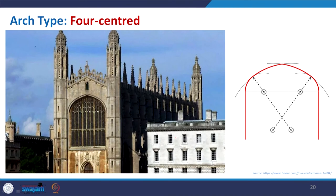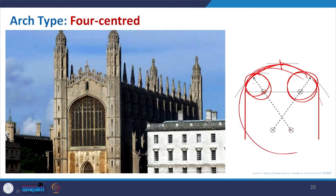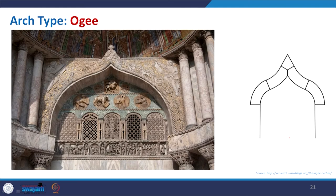The four-centered arch allows you to control the form with four points — with two circles in two positions and then two larger ones, controlling how the geometry changes. By increasing the number of control points you can create different geometries. The four-centered arch is mostly used in churches. The ogee arch is formed in a direction that creates a dynamic form, giving it a unique appearance.